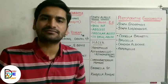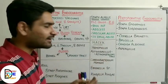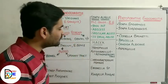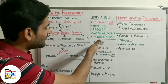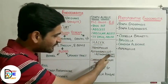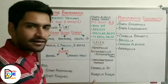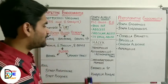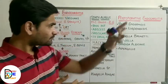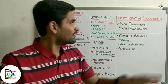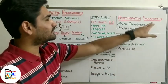Next we have the HACEK group of organisms. This mnemonic contains five organisms responsible for infective endocarditis; they are very virulent and resistant to penicillin. H for Haemophilus, A for Actinobacillus actinomycetemcomitans, C for Cardiobacterium hominis, E for Eikenella species, and K for Kingella species. Next, discussing post-operative endocarditis for patients who have undergone cardiac surgery with a prosthetic valve or material.